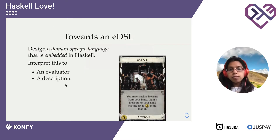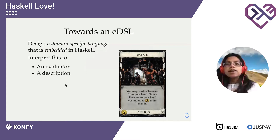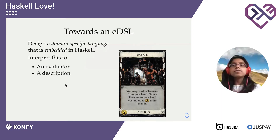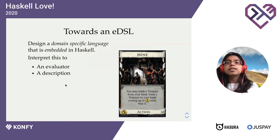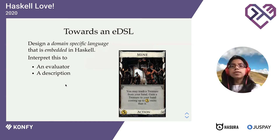So the problem that we're going to try and solve today is to design a domain-specific language, and we're going to embed this in Haskell, such that we can interpret this into Haskell functions. We will only write two interpreters — an evaluator for this language, and also a printer to print out its description. But the techniques we'll use can extend to all sorts of other interpreters.